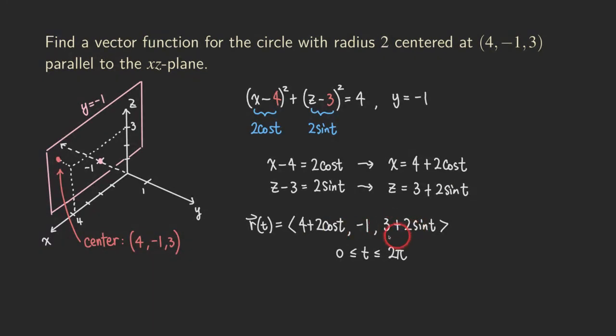And this is the vector function for a circle, radius 2. As you can see, those are the numbers in front of the cosine and the sine. And that's parallel to the xz plane. Okay, I didn't graph the circle right here because it's more difficult to graph the circle right here. But I just want to show you the center, and then you can imagine that the circle lies on this plane right here, which is y equals negative 1. Okay, so that's our final answer.